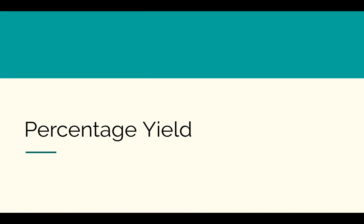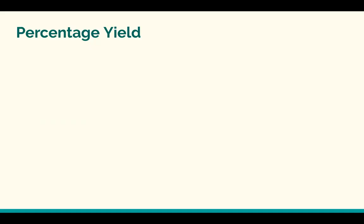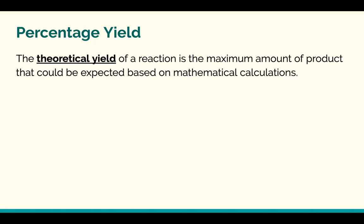When chemists carry out a reaction, they're never going to be 100% efficient. They won't get every single molecule of reactant to go to the product side of the reaction. So the way they get an idea of how well the reaction went is by calculating a percentage yield. So far in our calculations, we have been determining what's called a theoretical yield — the maximum amount of product that you could expect based on your stoichiometry calculations.